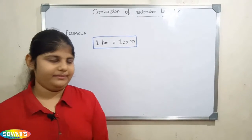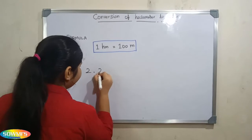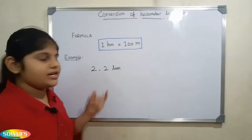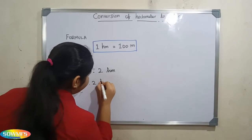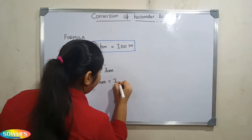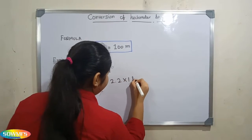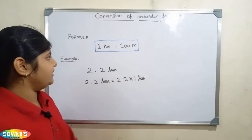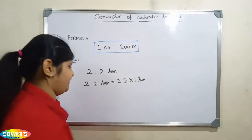Let us take one more example. 2.2 hectometer. 2.2 hectometer is equal to 2.2 multiplied by 1 hectometer. Now, we have to substitute 100 meter in the place of 1 hectometer.